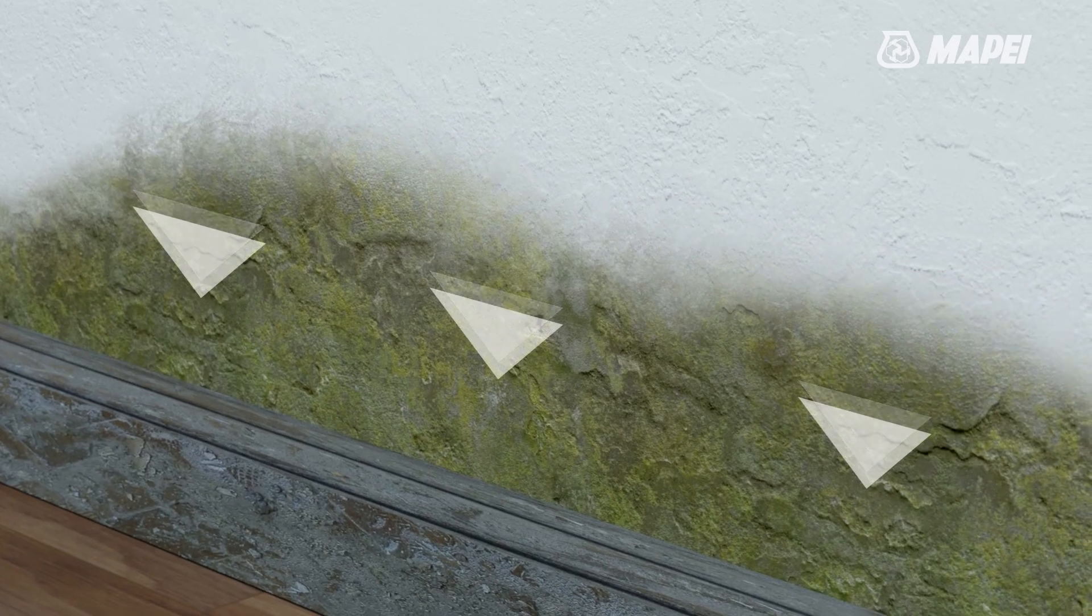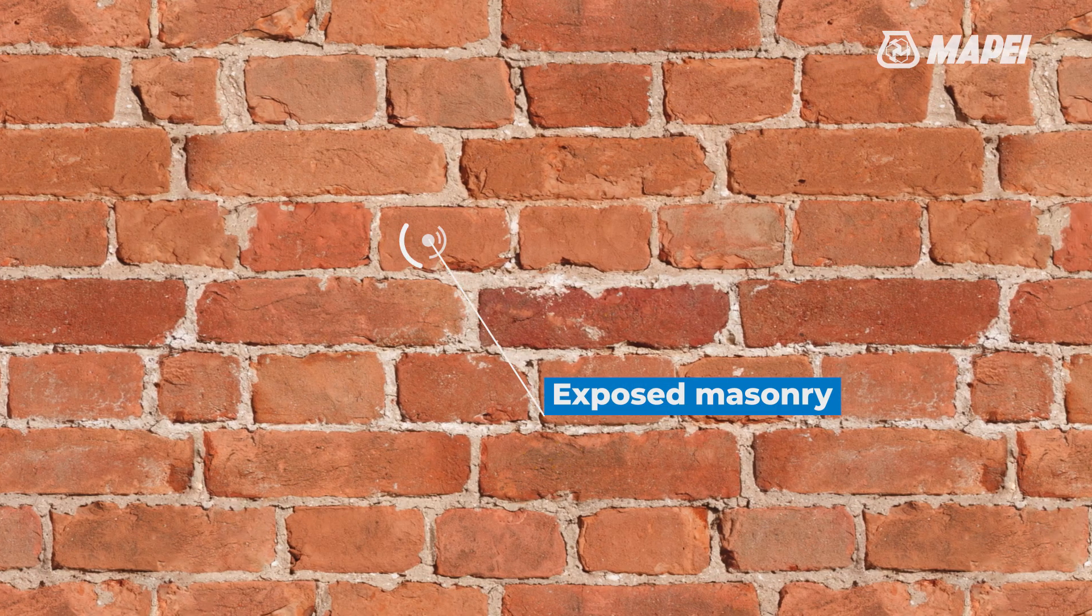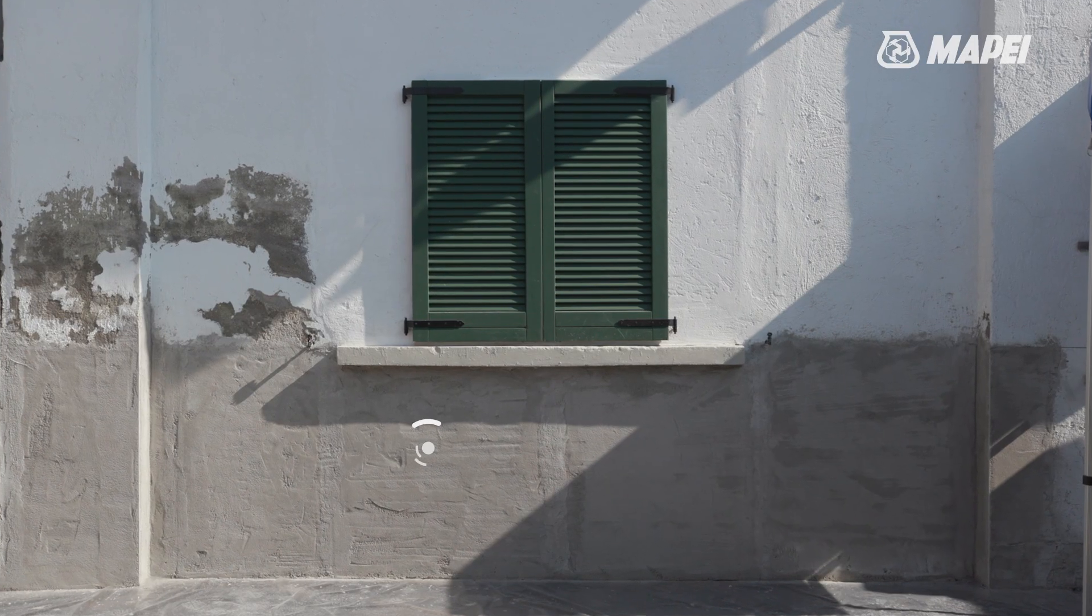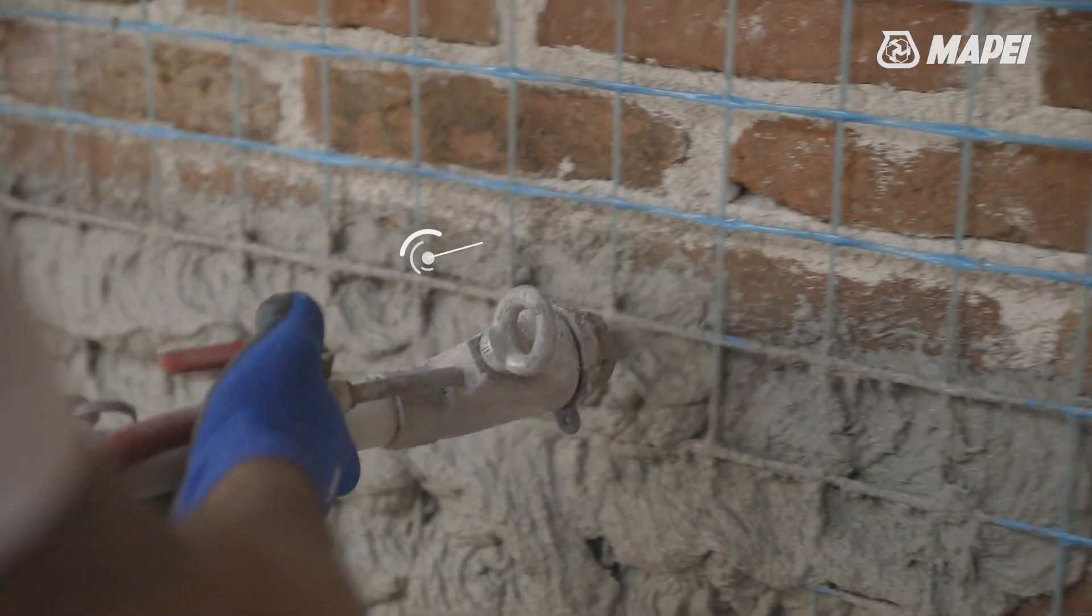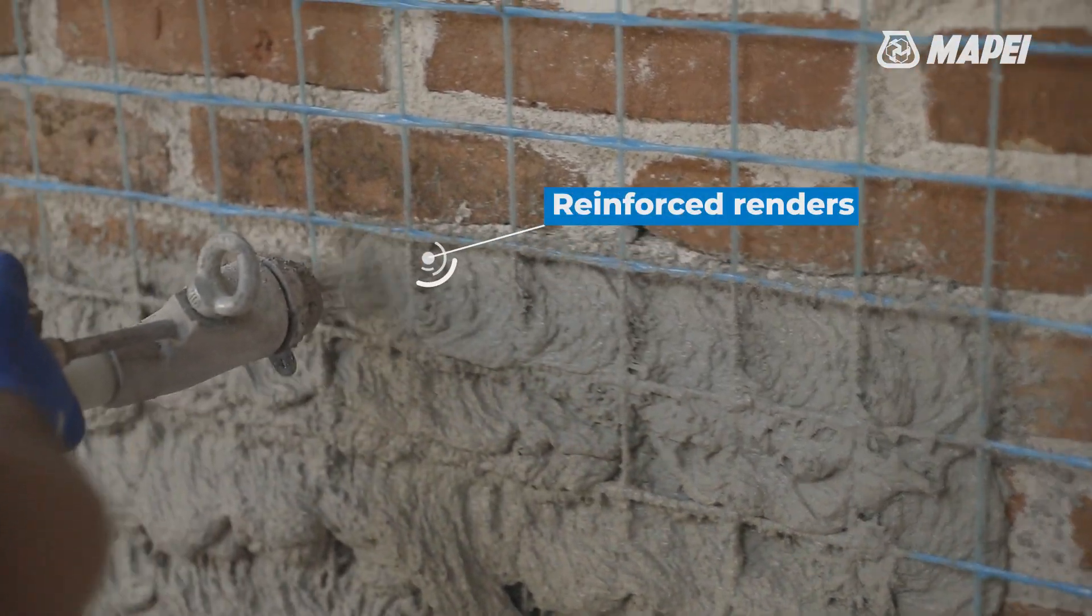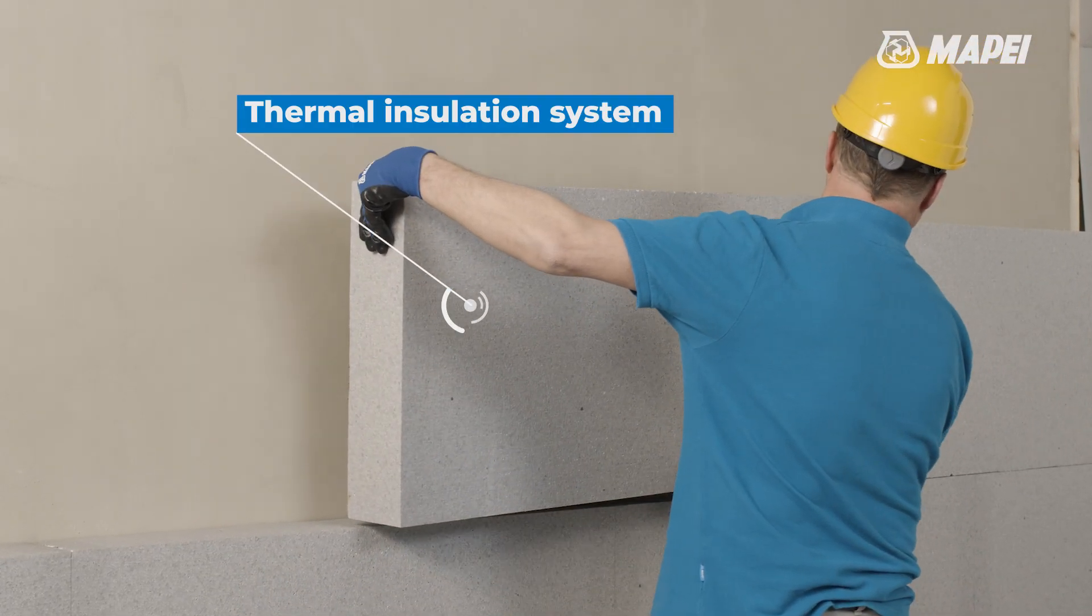To reduce humidity level in substrates, Mapistop Cream can be used on exposed masonry before applying dehumidifying renders, on strengthening systems with reinforced renders, before applying thermal plasters, before installing thermal insulation systems.